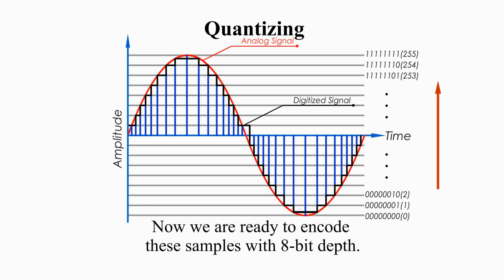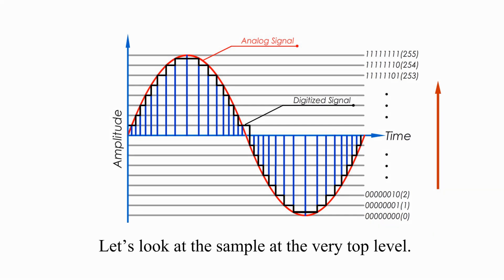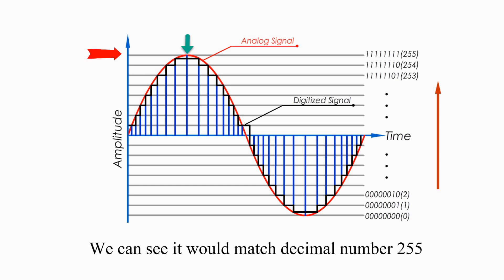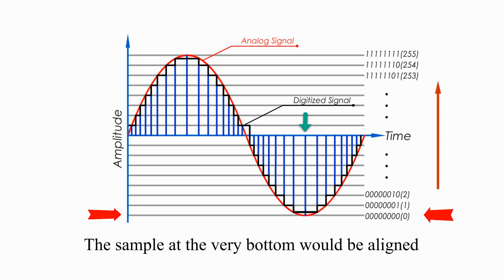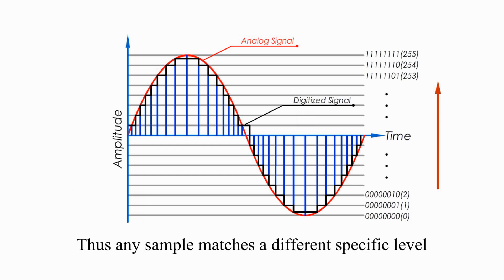Now, we are ready to encode these samples with 8-bit depth. Let's look at the sample at the very top level. We can see it would match decimal number 255, which is equal to binary number 11111111. The sample at the very bottom would be aligned with a decimal value 0, which is 00000000 in binary. Thus, any sample matches a different specific level with a specific binary value.